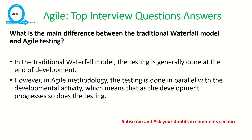The next question is: what is the main difference between the traditional waterfall model and agile testing? In the traditional waterfall model, testing is generally done at the end of development. However, in agile methodology, testing is done in parallel with development — which is what we also call test driven development or in-sprint testing.